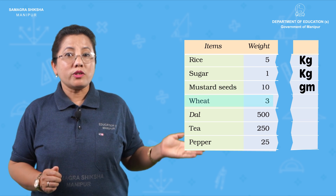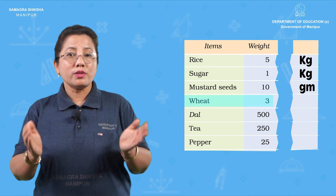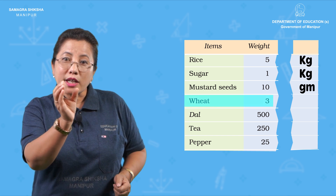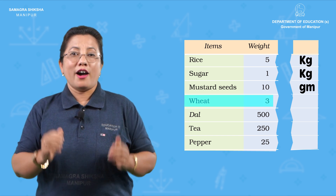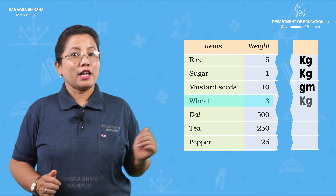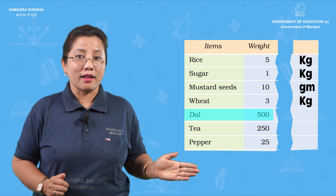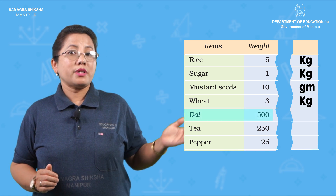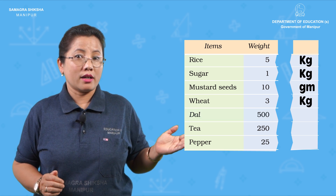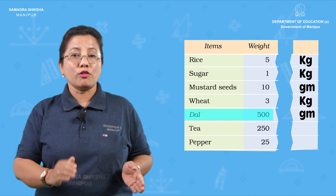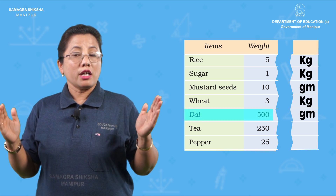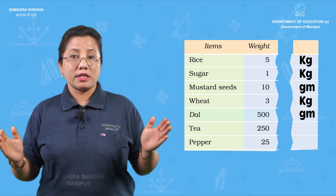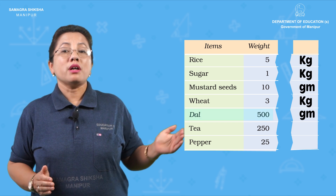Then wheat. It should be in kilograms. How is the kilogram? 500 — say 500. Can you find the gram? Yes, right, find that gram. It should be in grams.